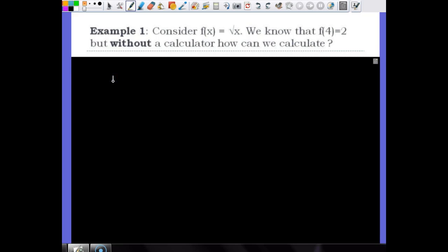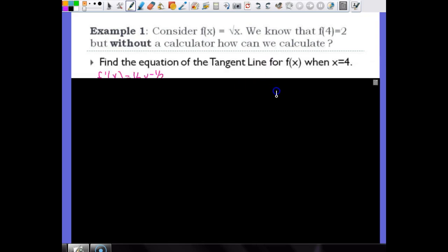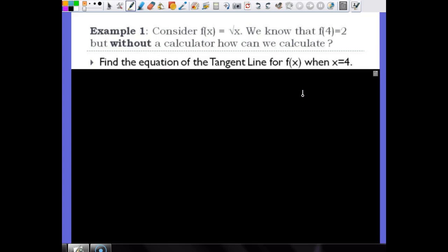So consider the function f(x) equals the square root of x. We know that f(4) would be 2, right? Square root of 4 is 2. We know that. But without a calculator, how could we calculate something near the square root of 4? Let's say 4.1.